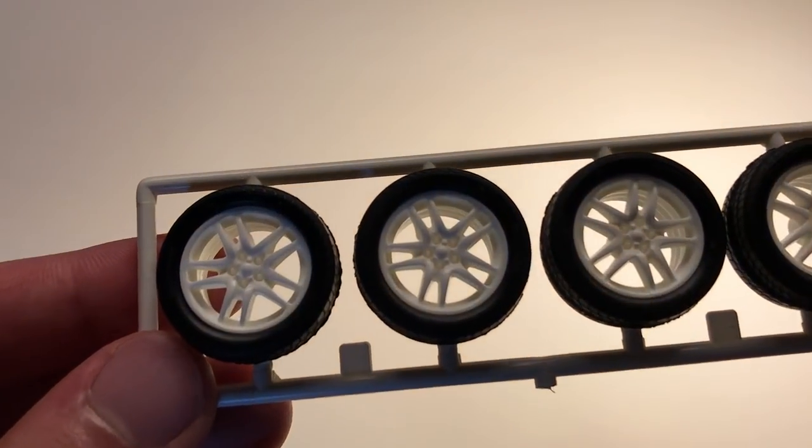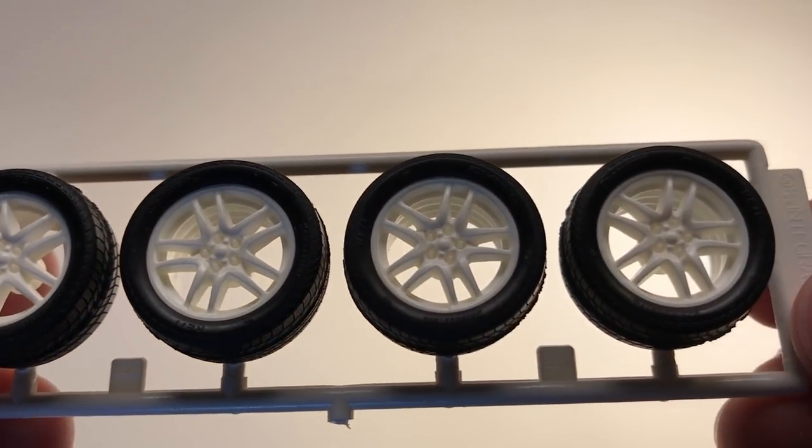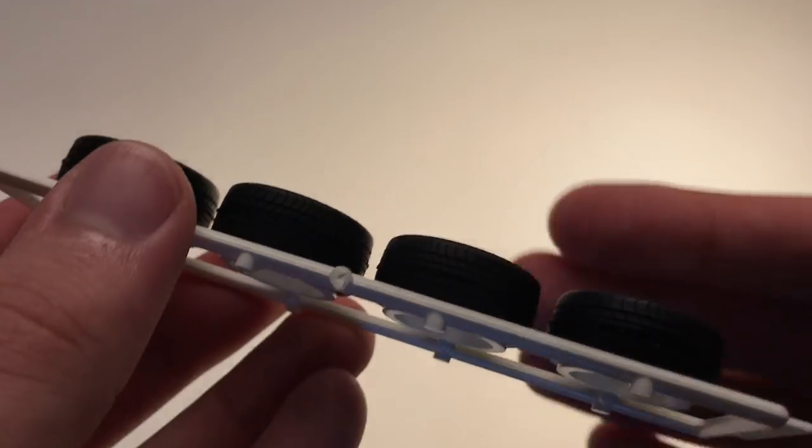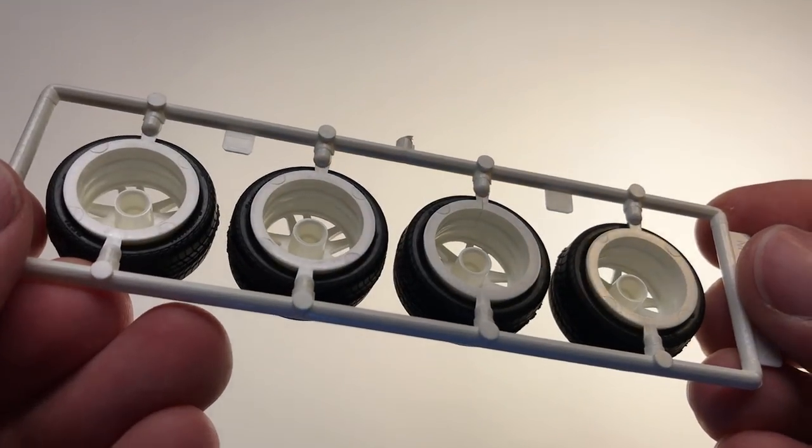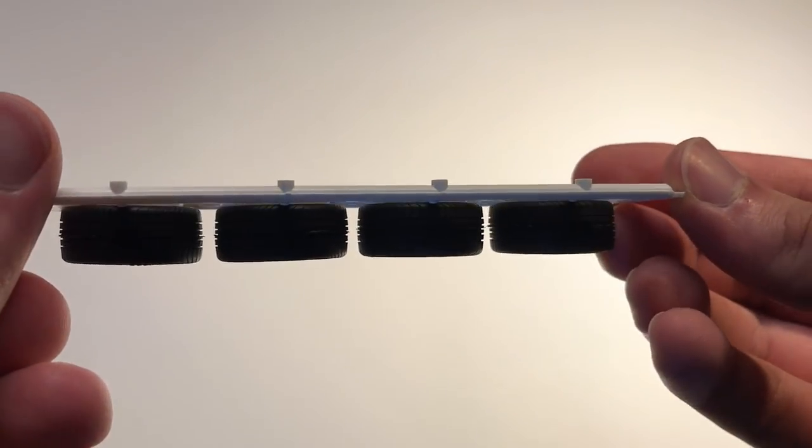The wheels and tires of course also come with this kit though they are not really that great. The wheels seem a bit small and the tires a bit too big though the thread pattern detail on there is really nice. I'm probably not going to be using any of these parts.